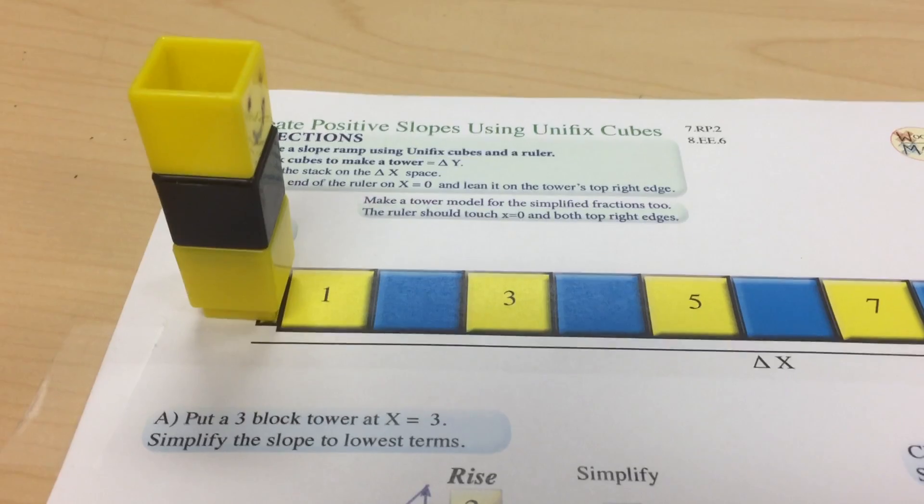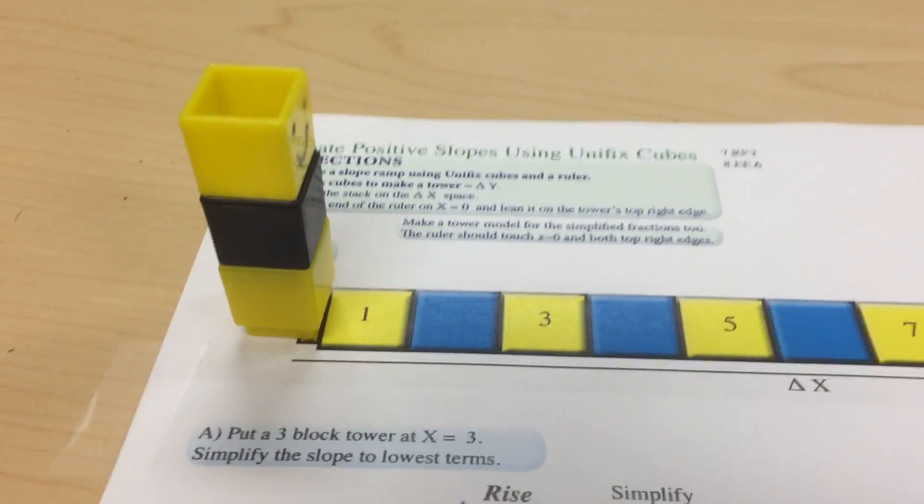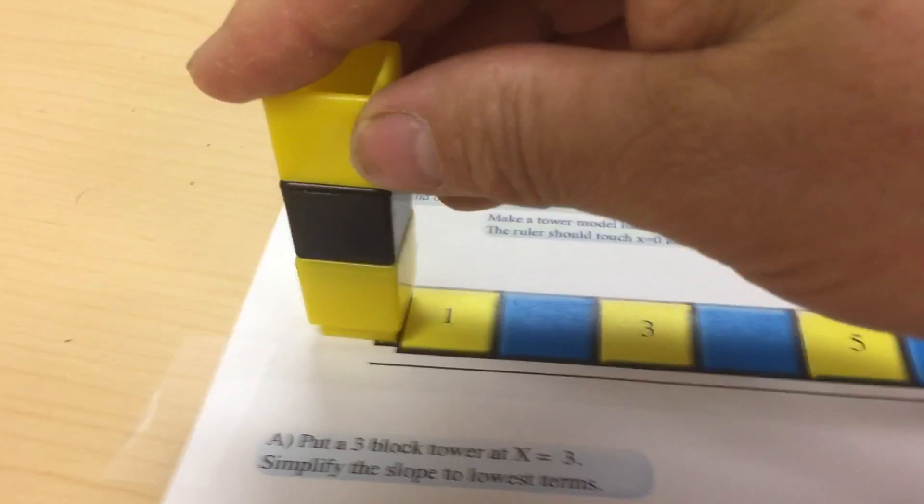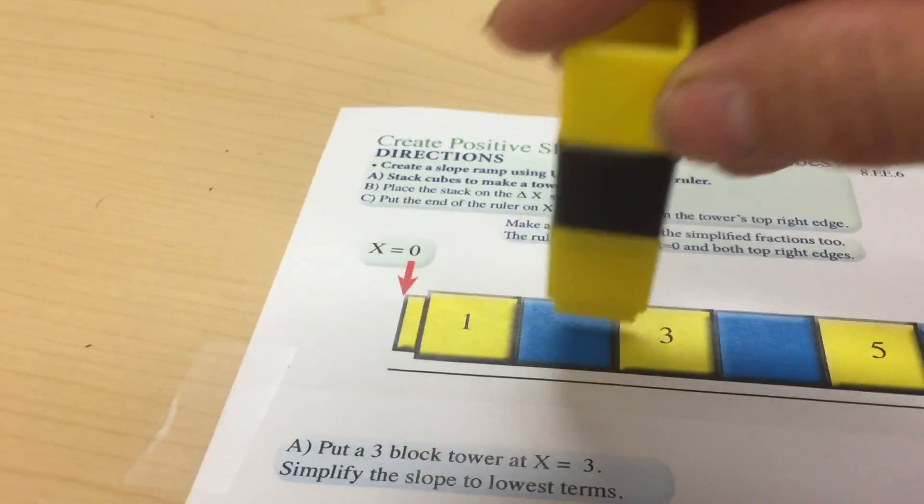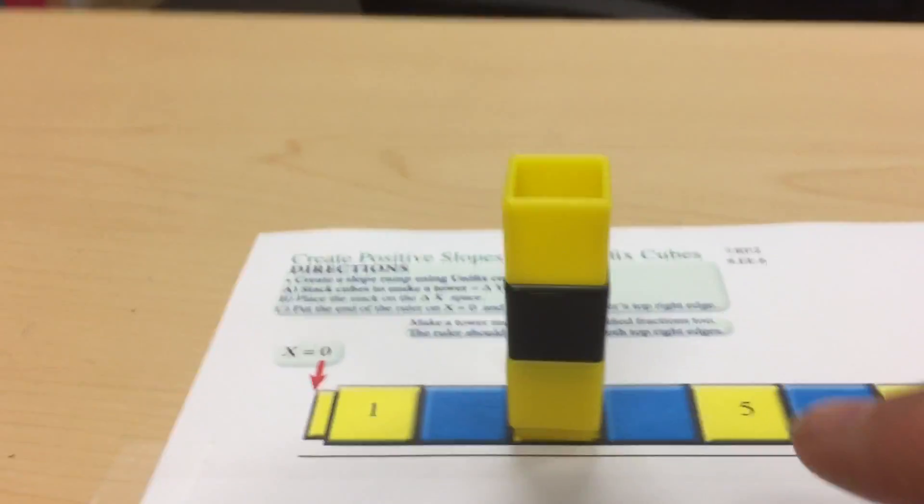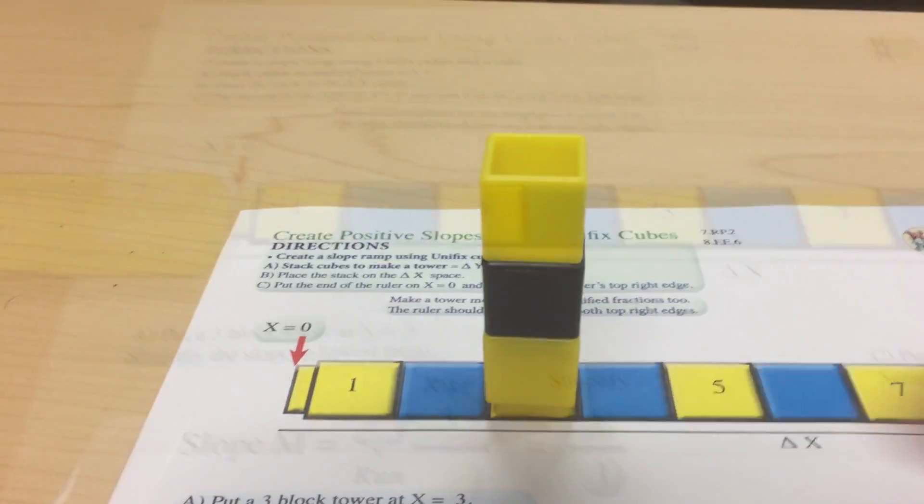Slope is the relationship between rise and run. So when we look at how this rise moves along the x-axis a certain number of spaces, when we compare the amount that it rises with the amount that it runs, we find slope.